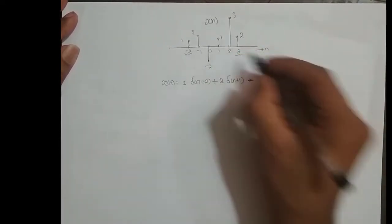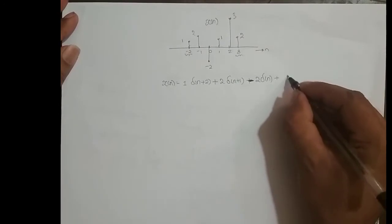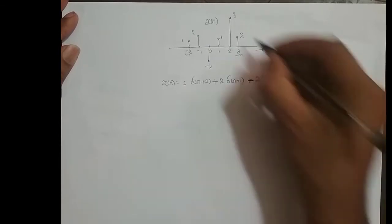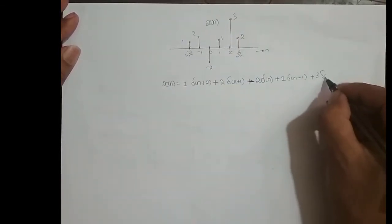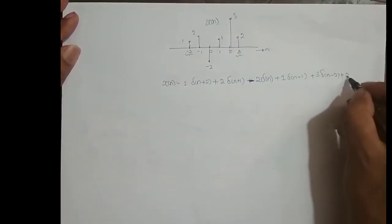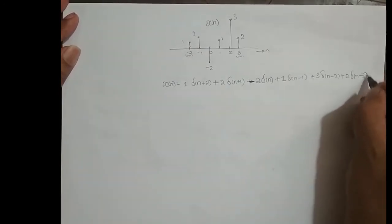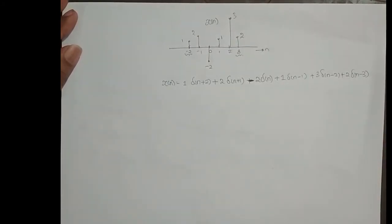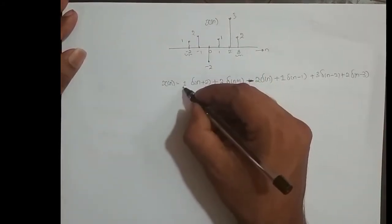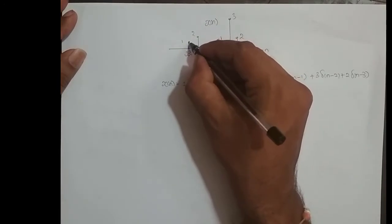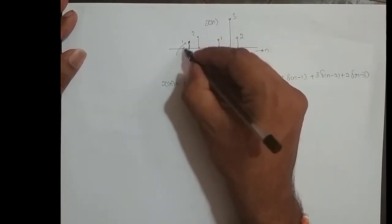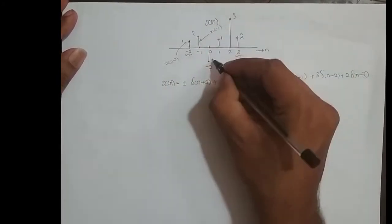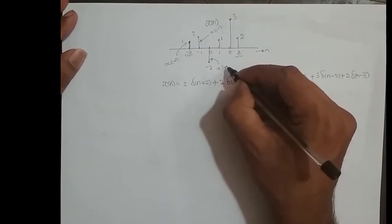Then delta of n shifted right 1 time — plus delta of n minus 1, amplitude 1. Plus 3 times delta of n minus 2, plus 2 times delta of n minus 3. This is how we represent a discrete-time signal in terms of unit impulse functions. Now, how do we address these samples? This sample is X of minus 2, this is X of minus 1, and this is X of 0.